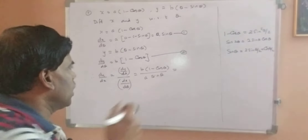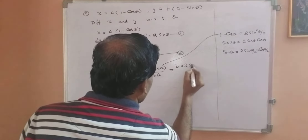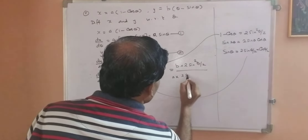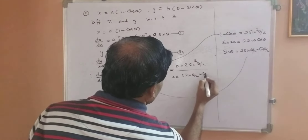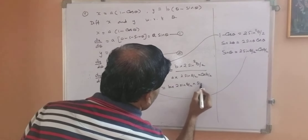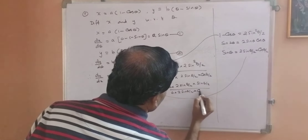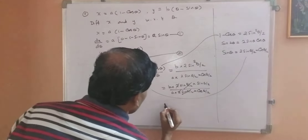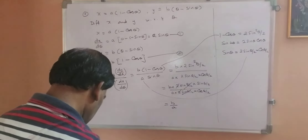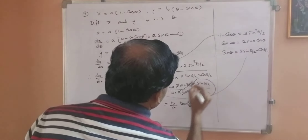So dy by dx equals dy by dθ upon dx by dθ equals b(1 − cos θ) upon a·sin θ. Substituting the identities: this becomes b·2·sin²(θ/2) upon a·2·sin(θ/2)·cos(θ/2). The 2 and one sin(θ/2) cancel, giving (b/a)·sin(θ/2) upon cos(θ/2), which equals (b/a)·tan(θ/2), because sin upon cos is tan.